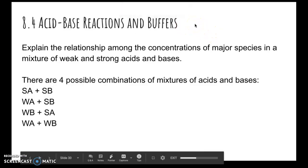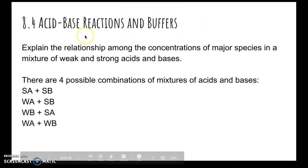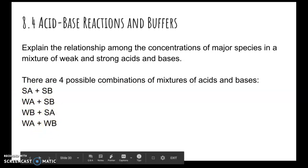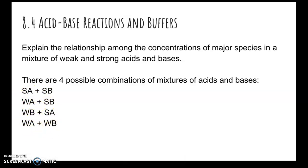Here are the 8.4 notes. 8.4 is on acid-base reactions and buffers. The goal in this section is to explain the relationship among the concentrations of major species in a mixture of weak and strong acids and bases. There are four possible combinations: two strongs, weak acid and strong base, weak base and strong acid, and two weaks.